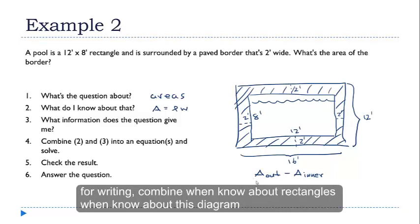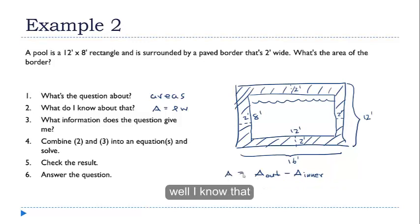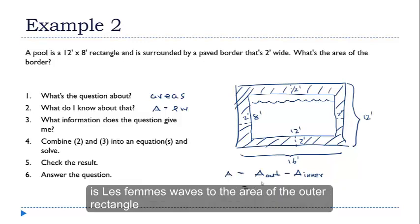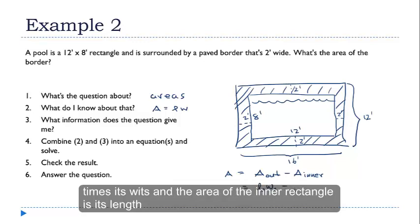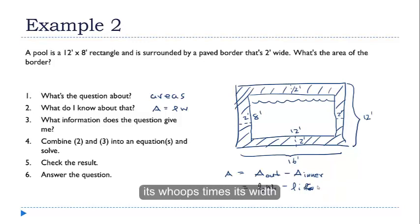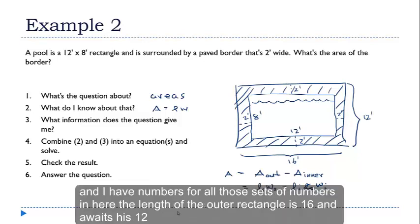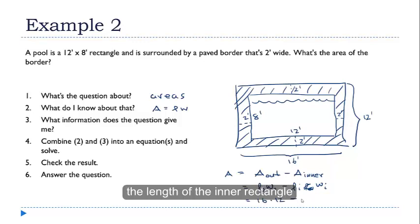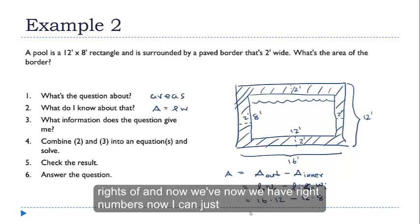So now I'm on to step four. I'm trying to combine what I know about rectangles with what I know about this diagram. I know that the area of a rectangle is length times width. So the area of the outer rectangle is its length times its width. And the area of the inner rectangle is its length times its width. And I have numbers for all of those. So let's put numbers in here. The length of the outer rectangle is 16 and the width is 12. The length of the inner rectangle is 12 and its width is 8. So there. Now we have numbers. Now I can just do some arithmetic.